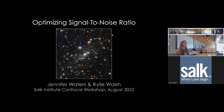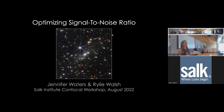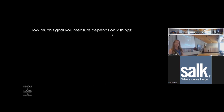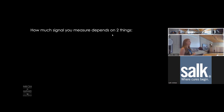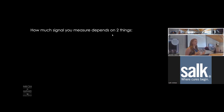We've talked a lot so far about signal-to-noise ratio and what it is. Now we're going to talk about things you can do in your experimental planning to optimize your signal-to-noise ratio in your images. If you want to increase your signal-to-noise ratio, you've got two options: you can decrease the noise or you can increase the signal.